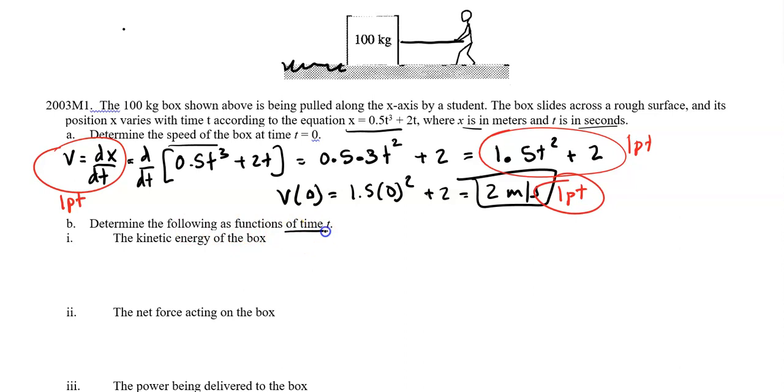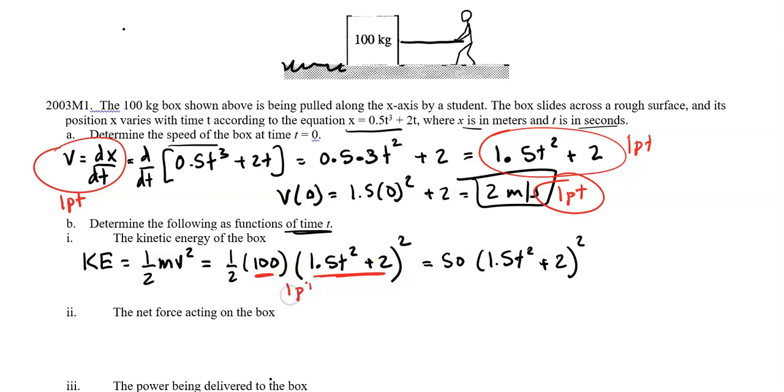Let's go on to the next one. We want all the following as functions of time t, so that just means t is allowed to be in our answer. We want kinetic energy of the box. Let's write out the kinetic energy equation: KE = ½mv². The mass is 100, and velocity we found previously - that's our general velocity equation 1.5t² + 2. Don't forget it is squared, so easy to forget that squared. It doesn't say to simplify totally, but let's do a tiny bit: one half times 100 is just 50, so that's 50(1.5t² + 2)². Don't simplify unless it says to simplify. This part of the problem is only worth one point - if you substitute in the correct mass and correct velocity, that is just one point total.